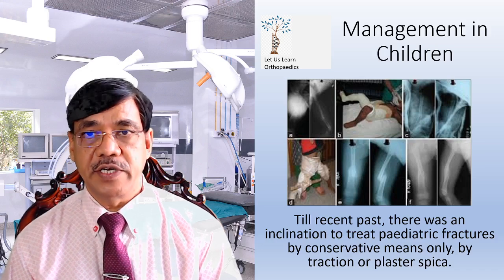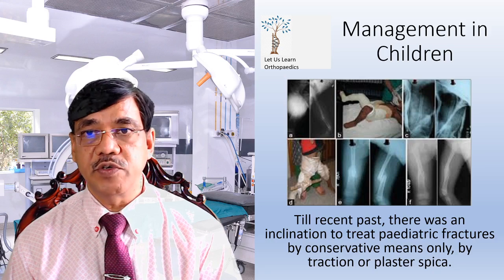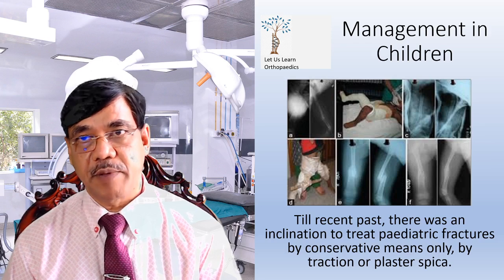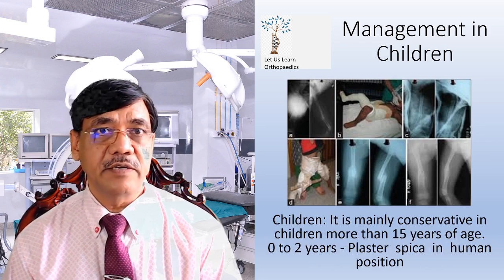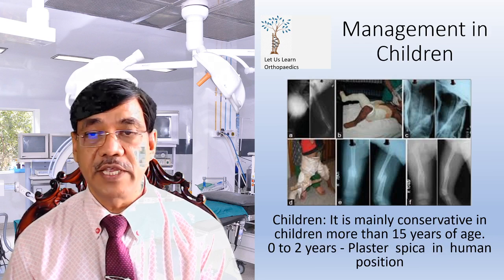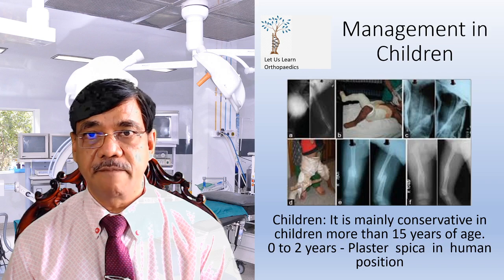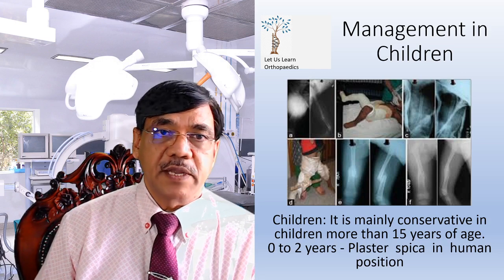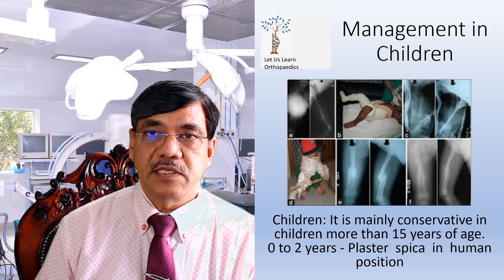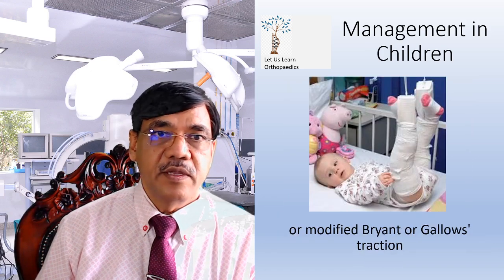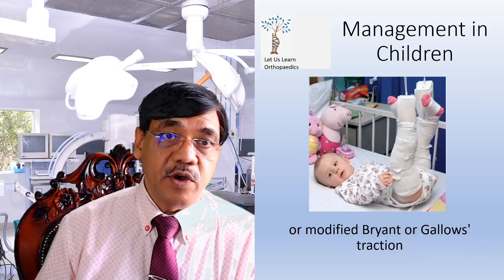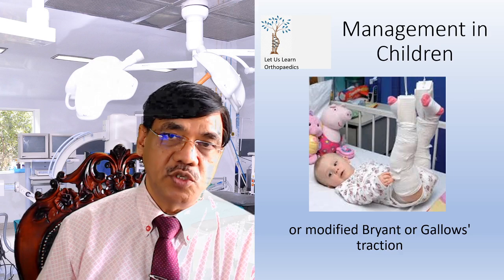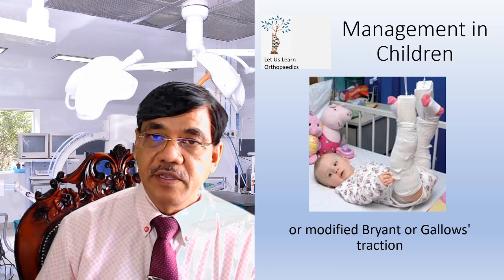The management in children: until recently, there was an inclination to treat pediatric fractures by conservative means only, by traction or plaster spica. For children less than 15 years, treatment is conservative. For 0 to 2 years, a plaster spica in a human position is applied. Modified Bryant's or Gallows traction is applied in children less than 2 years of age and weight less than 10 kg.